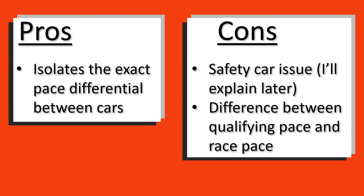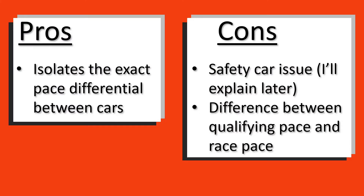I thought this was perfect. The pros: it isolates the exact pace differential between the cars — the raw qualifying pace when everything is turned up to max, every driver pushing as hard as they can. This is what I had been aiming for. However, the cons: the safety car issue — which I'll explain later — and critically, the difference between qualifying pace and race pace, which is what really threw version 4 off.